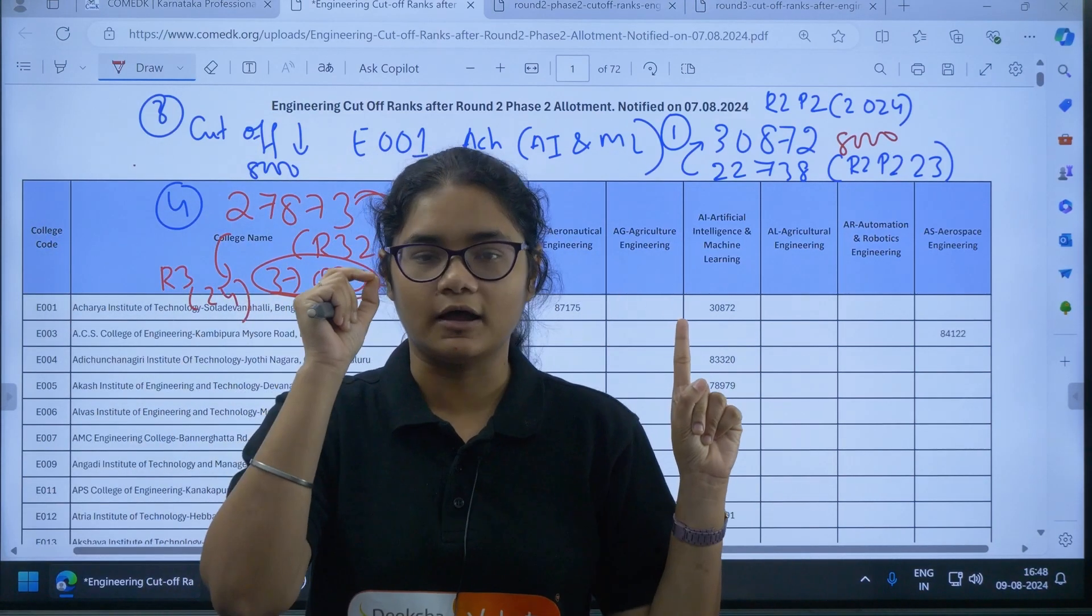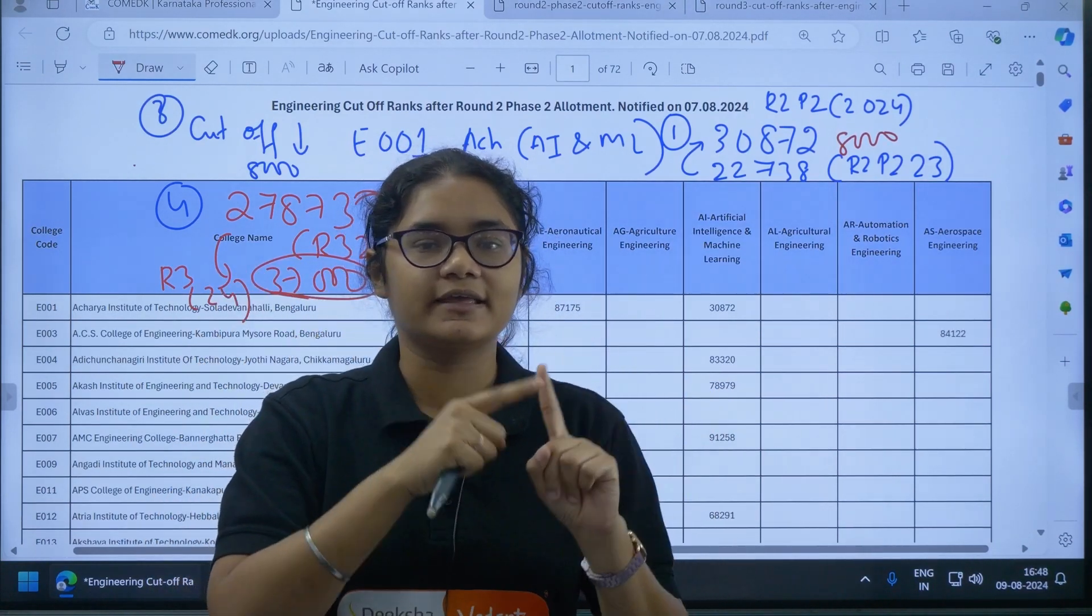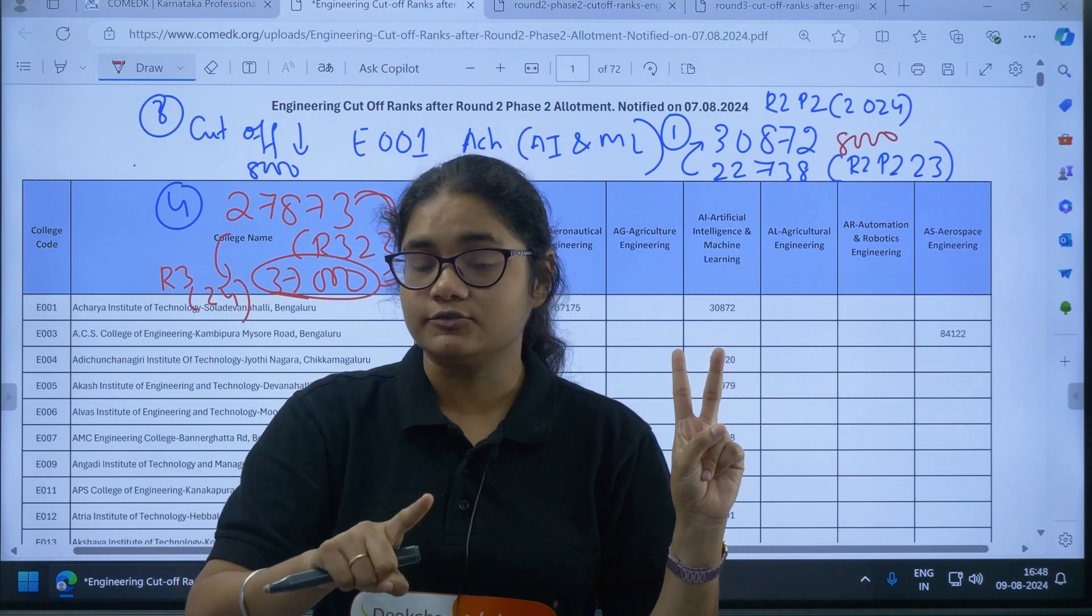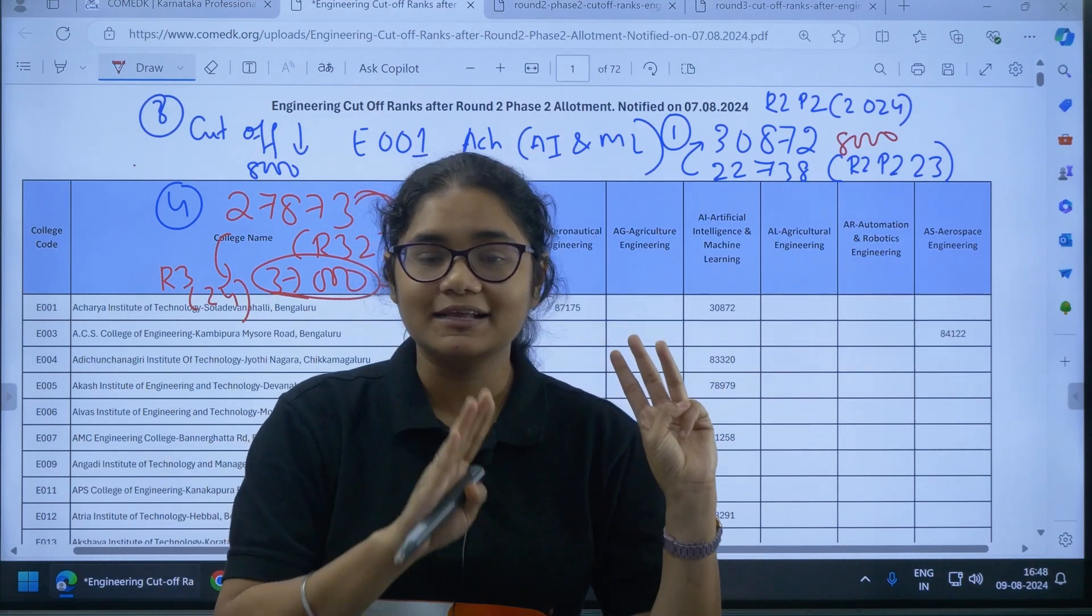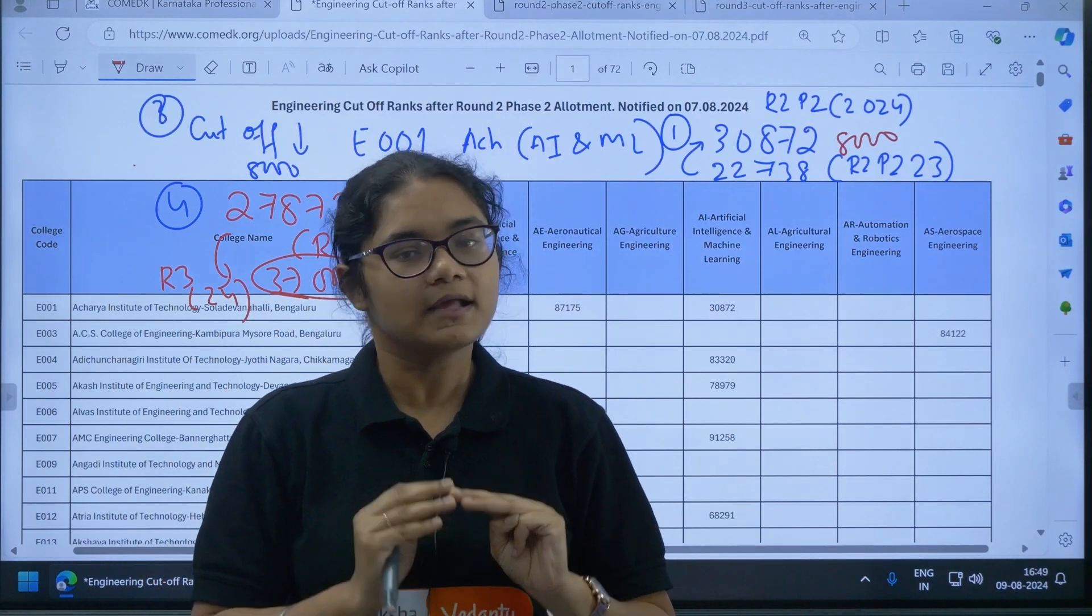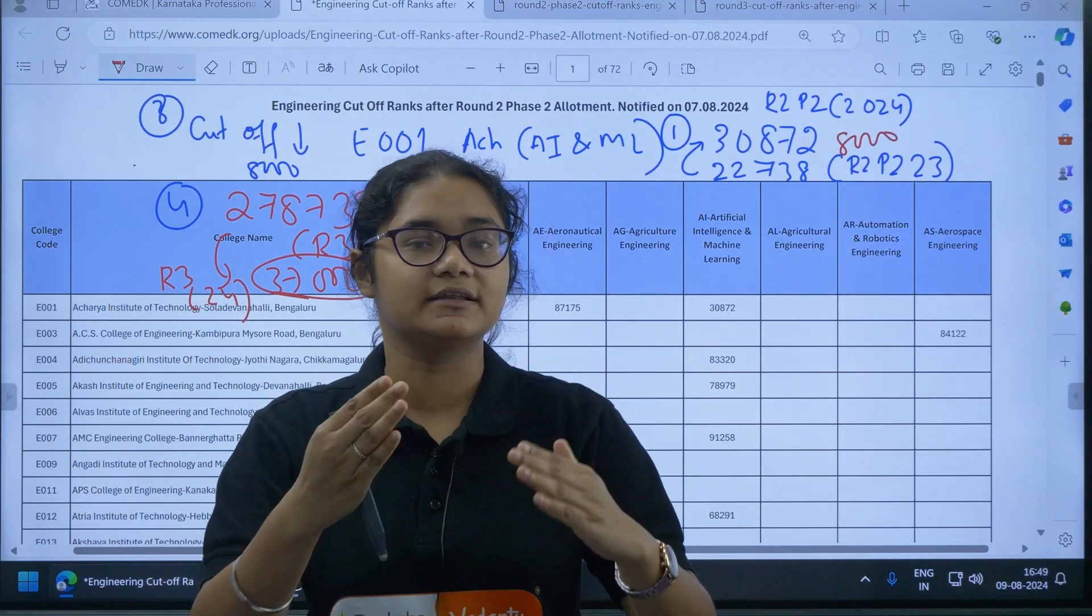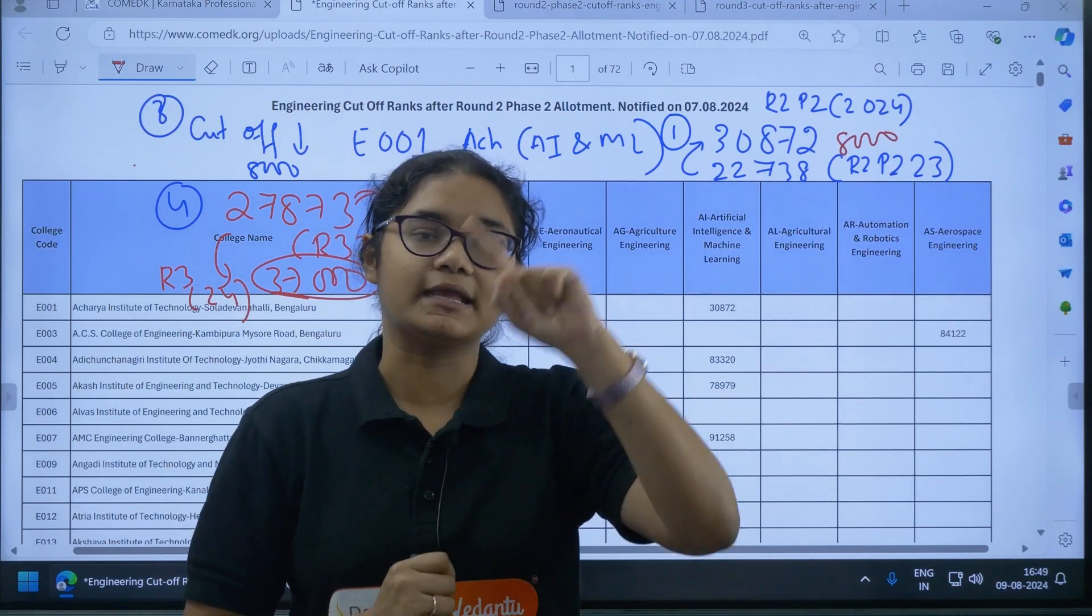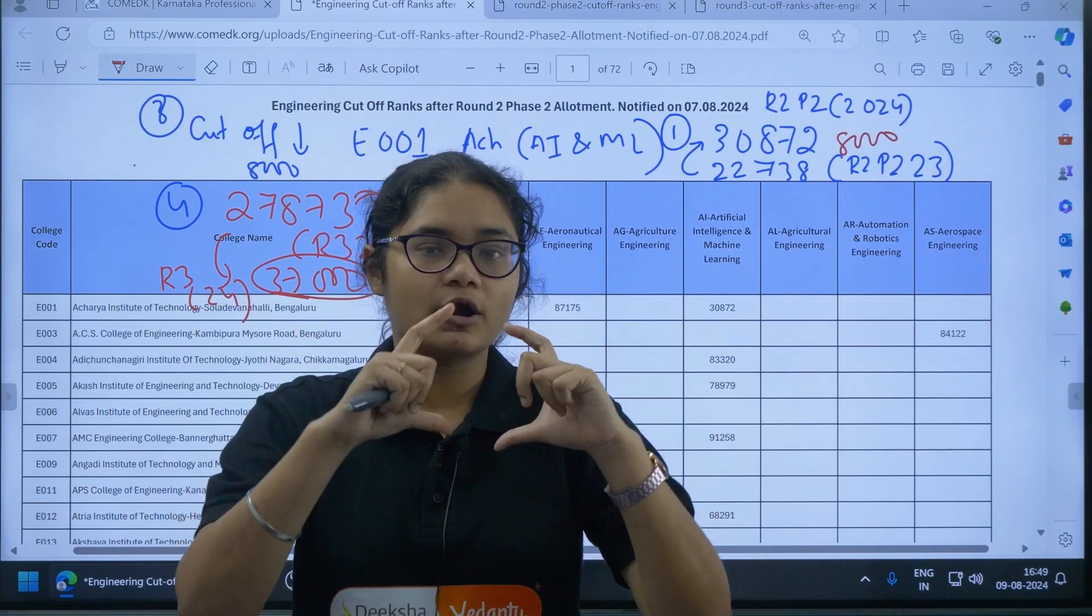Let me repeat it once again, summarize it. Step 1, whichever is your first preference or the best preference you really want to join, whichever college and course, check their Round 2 Phase 2 cutoff. Step 2, check the cutoff of Round 2 Phase 2 2023 for the same course and the same college. Third step, analyze the trend, whether it is increasing or decreasing, whether the cutoff has gone high or the cutoff has come down. After this, fourth one, check what is the difference between them. How much increase or decrease is there? Based on that, predict the cutoff for Round 3 2024 by taking the data from Round 3 2023.